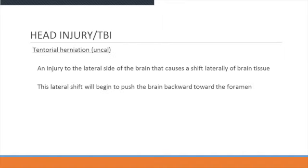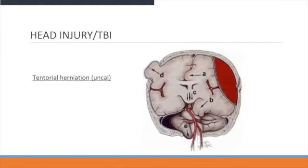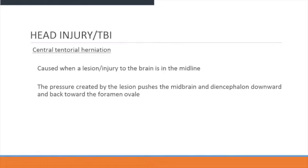Tentorial herniation is an injury to the lateral side of the brain that causes a lateral shift of the brain tissue. The lateral shift will begin to push the brain backwards toward the foramen. Here is an illustration of the tentorial herniation — you can see it pushing from the lateral side inward.